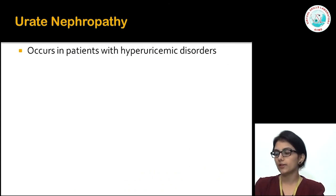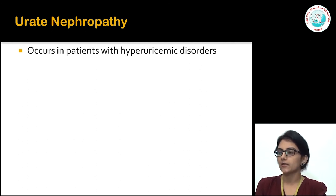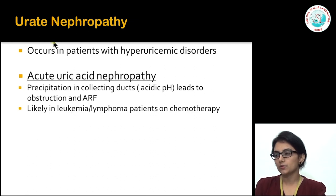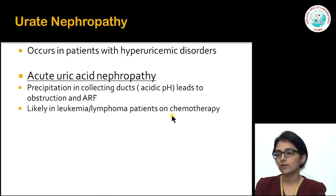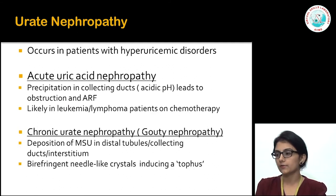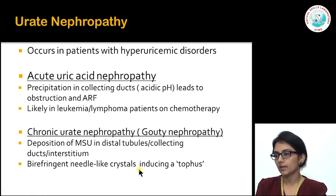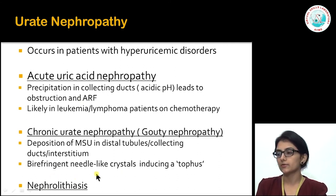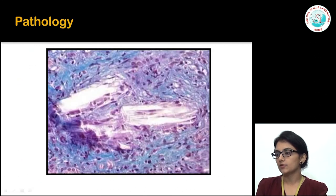Moving on to metabolic causes of tubulointerstitial nephritis — the first important cause is urate nephropathy occurring in patients with hyperuricemia. In acute uric acid nephropathy, uric acid precipitates in collecting ducts at acidic pH, leading to obstruction and acute renal failure. This is a common complication in leukemia and lymphoma patients on chemotherapy due to extensive cell death releasing large amounts of uric acid. In chronic urate nephropathy, also called gouty nephropathy, birefringent needle-like crystals of monosodium urate induce a tophus and fibrosis in the tubular interstitium, similar to joint involvement in gout.